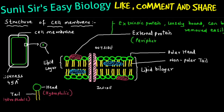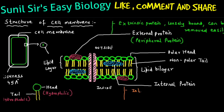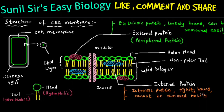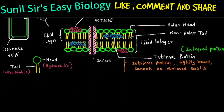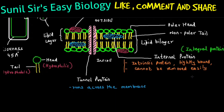The next type is internal protein, also called intrinsic protein. Intrinsic proteins are located between the two lipid layers, so they are tightly bound and cannot be easily removed. The other name for internal protein is integral protein. The last protein type is tunnel protein — the structure traveling across the membrane. It is the most important protein as it gives a pathway for molecules to pass through, connecting the inner and outer side and visible on both ends of the plasma membrane.